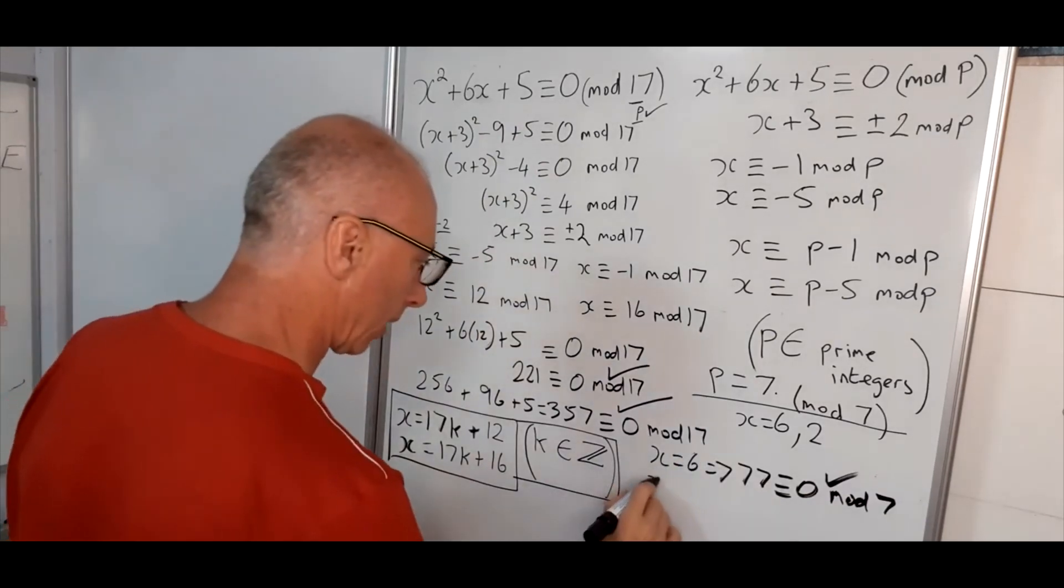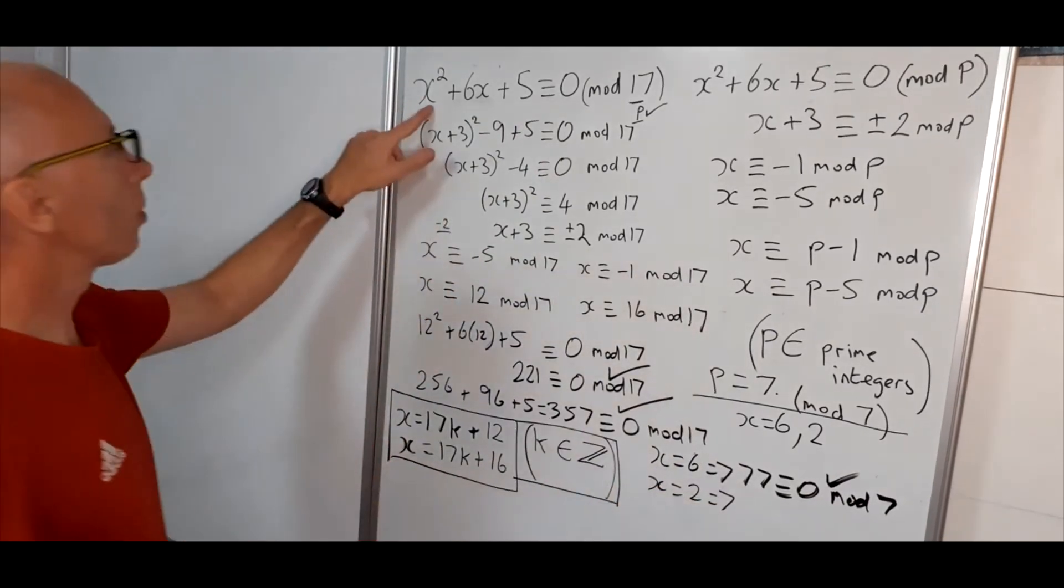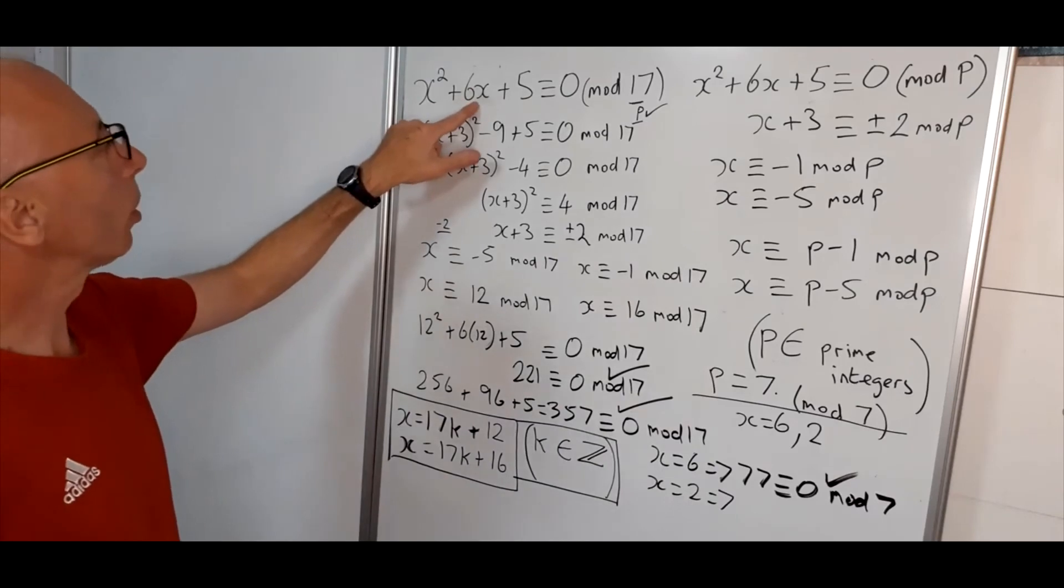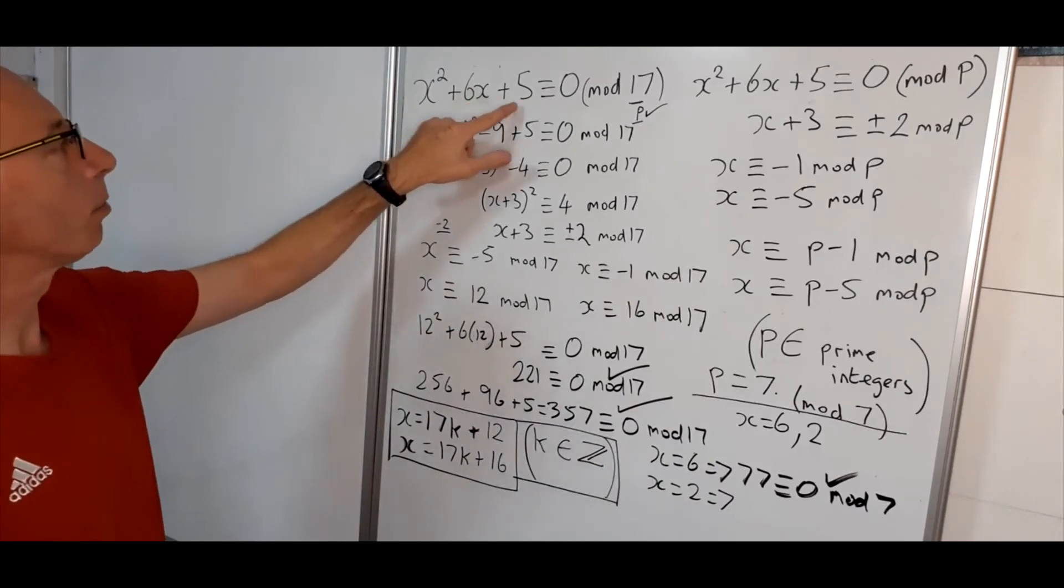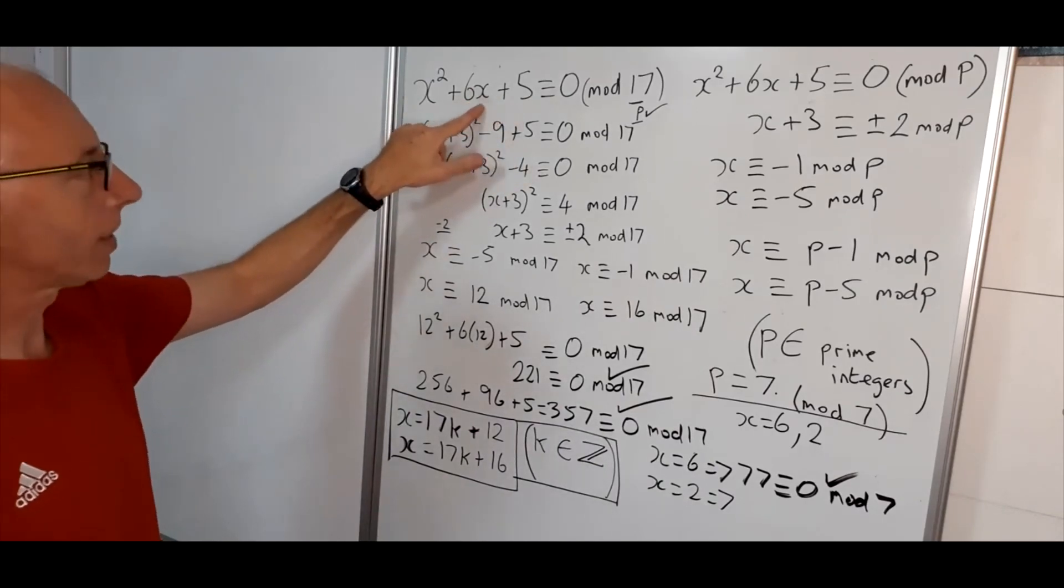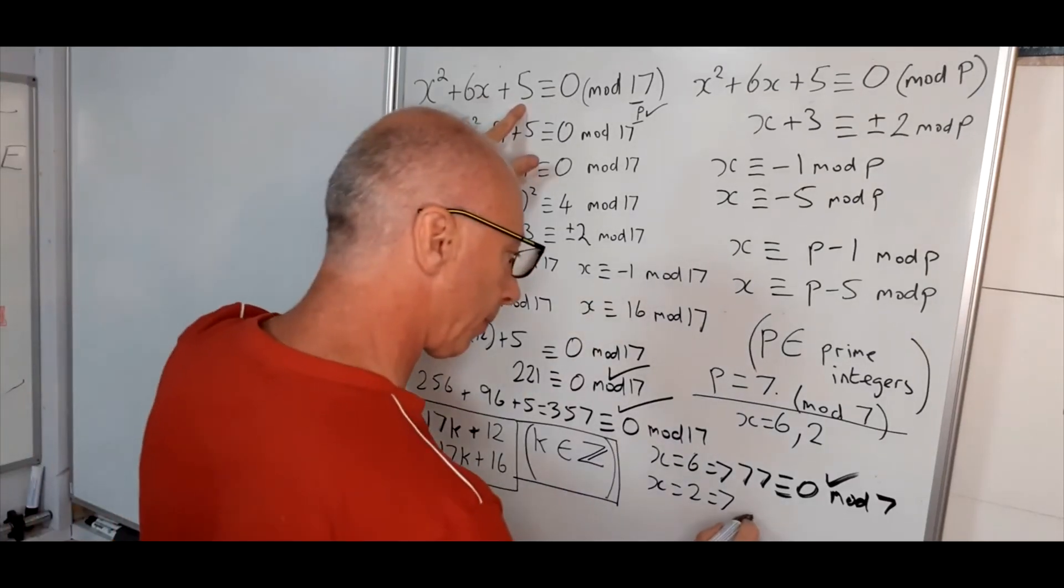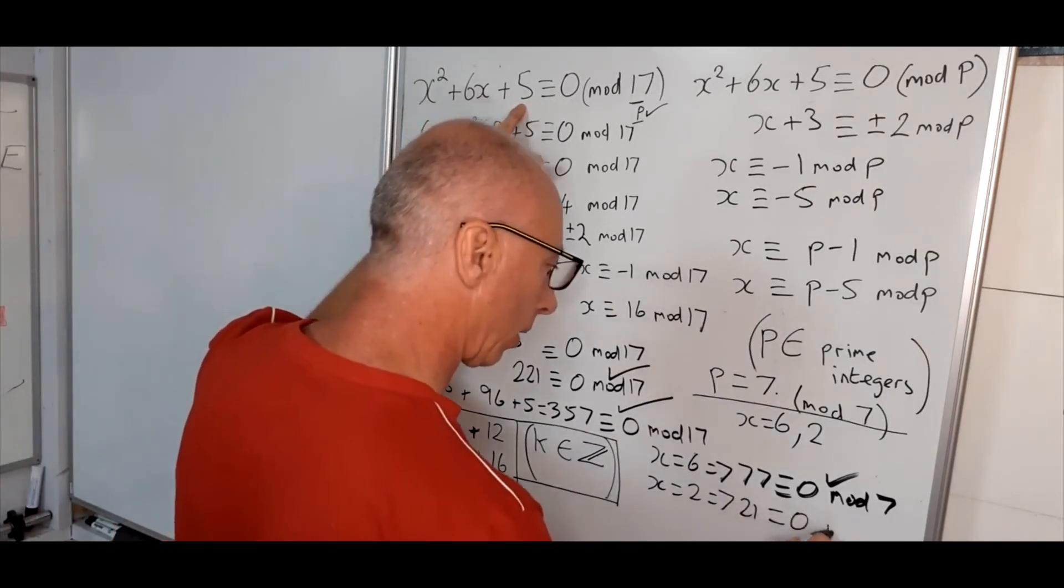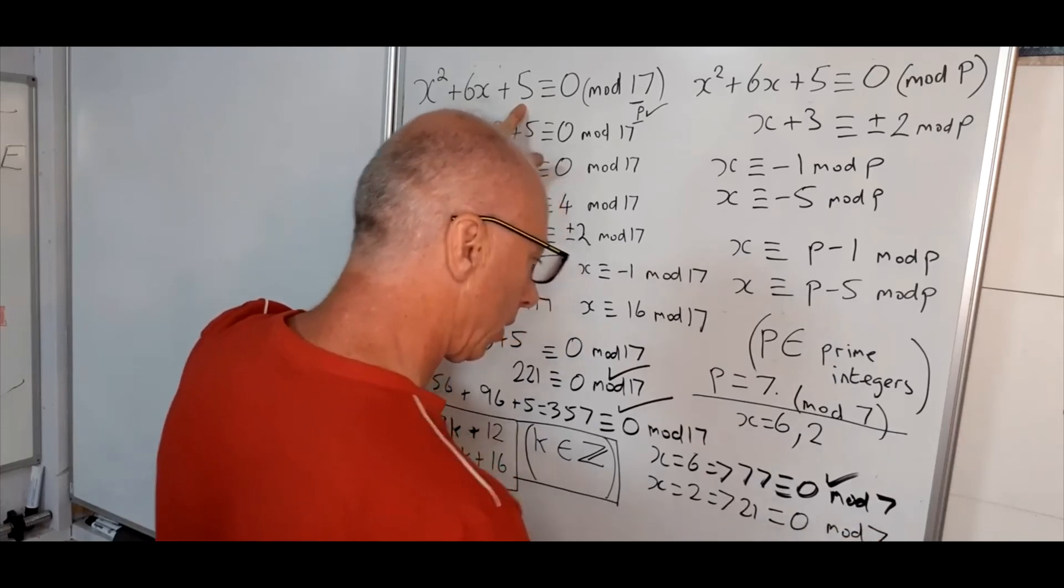And now for the general case, x equals 2. 2 squared is 4. Plus 12 is 16, plus 5 is 21. So 21 is also congruent with 0 mod 7.